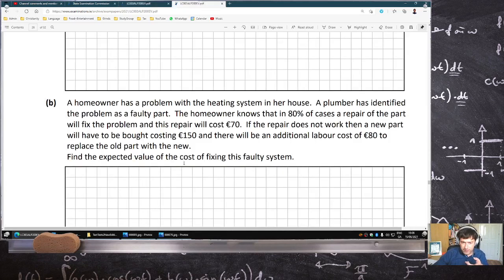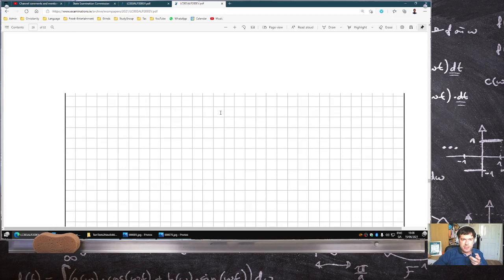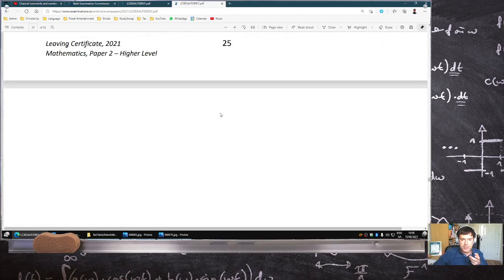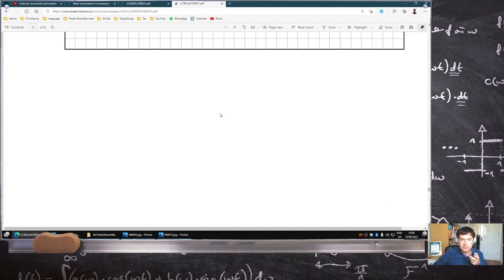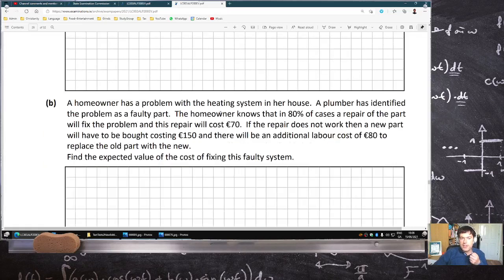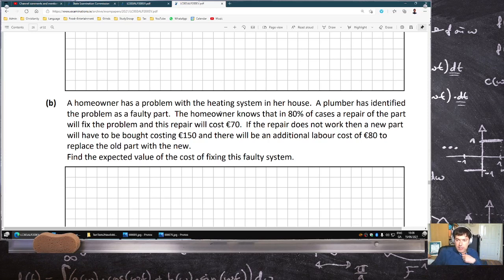The second issue I had - before I go on, I kind of feel like this one's definitely 50-50. You could read it either way. The next one here is with the homeowner problem, the last question on the paper. The homeowner has a problem with the heating system. A plumber has identified the problem as a faulty part. The homeowner knows that in 80% of cases a repair of the part will fix the problem, and this repair will cost 70 euros. If the repair does not work, then a new part will have to be bought, cost 150 euros, and there will be an additional labor cost of 80 euros to replace the old part with the new part.